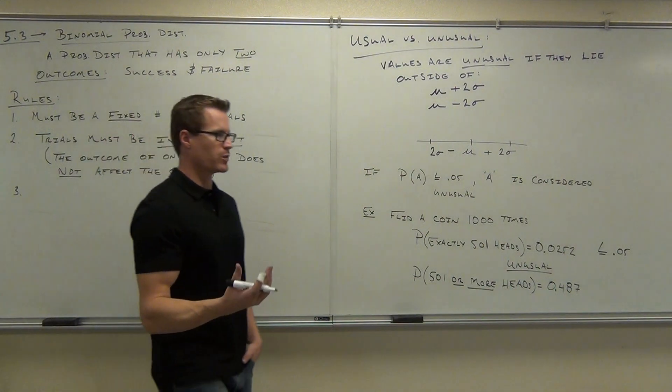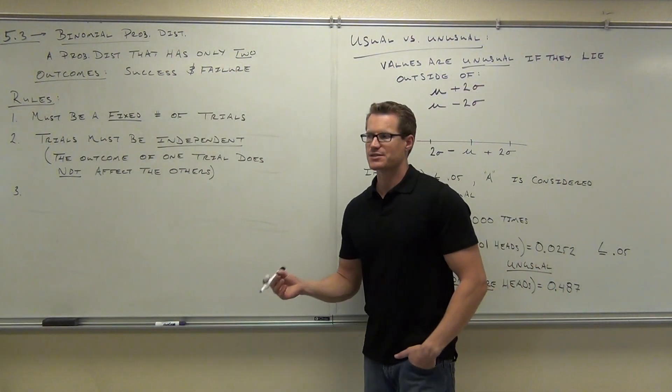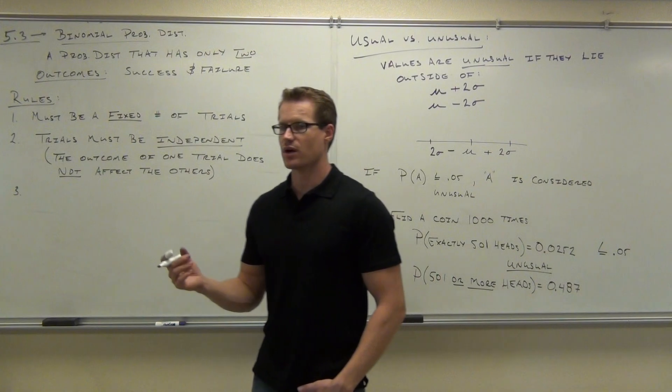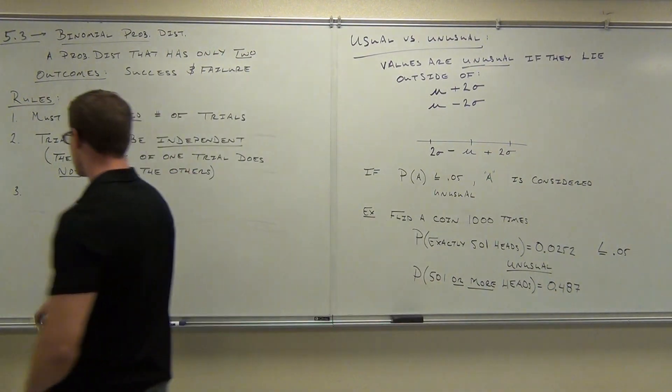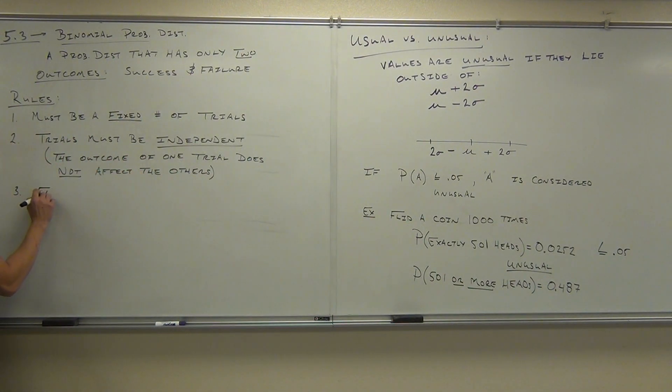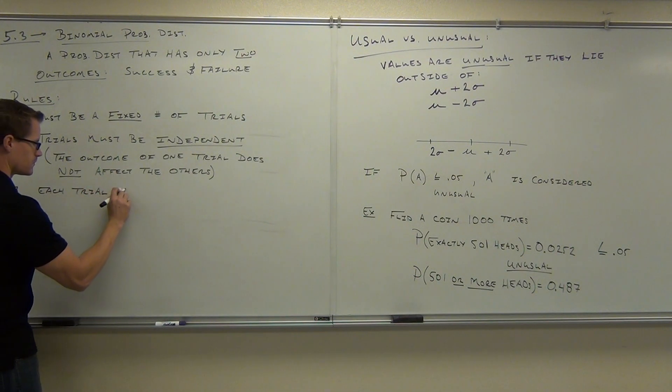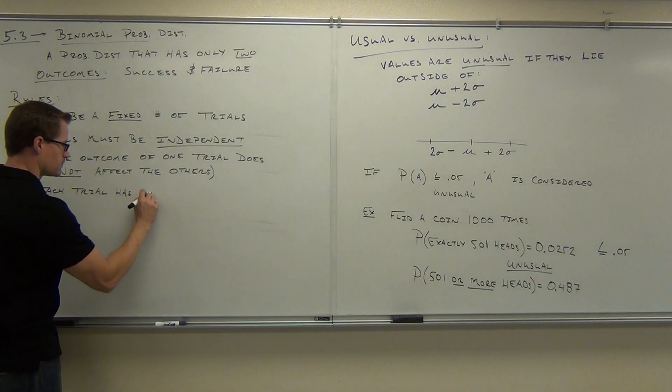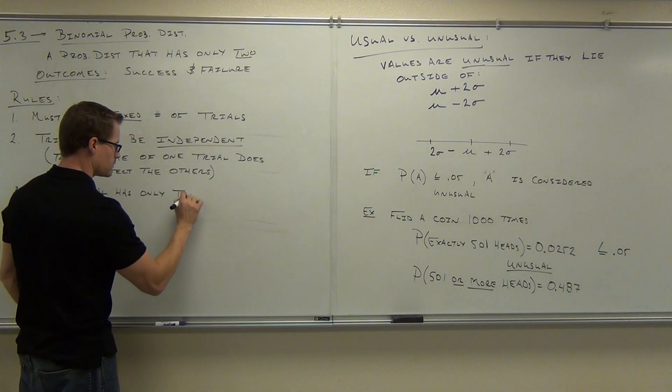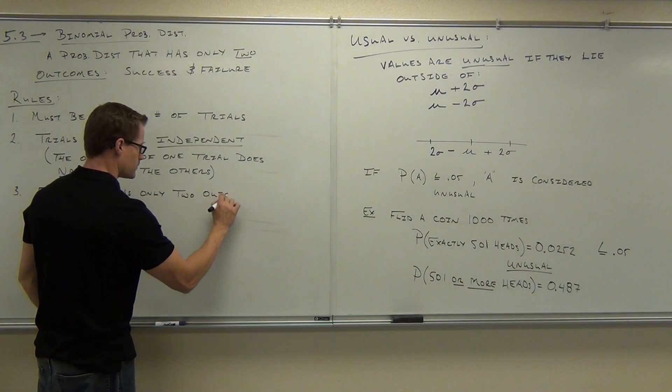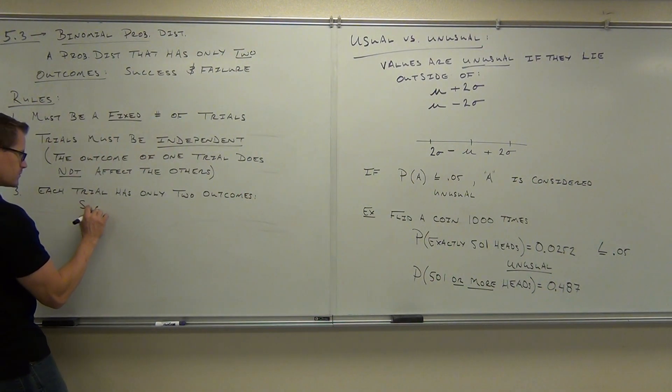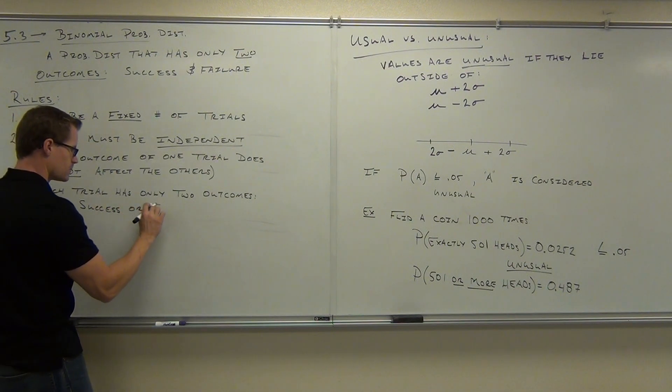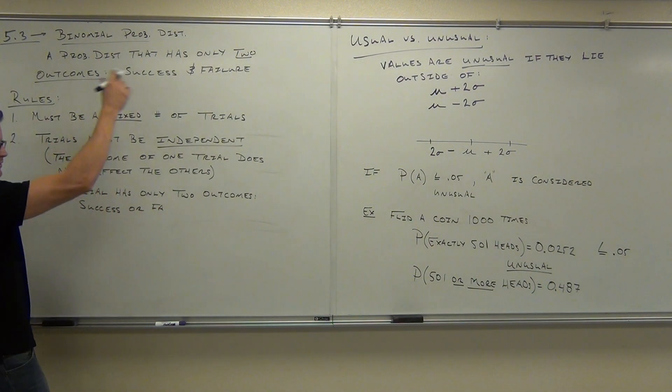Third, this is where we get the binomial part. We just spoke about this. Each trial has to have only two outcomes, either a success or a failure, or once you qualify a success, once you categorize a failure. So each trial has only two outcomes. That's got to naturally be there. That's how we start this whole thing out.